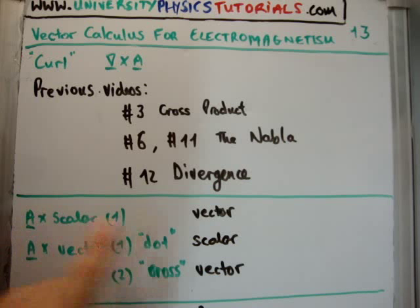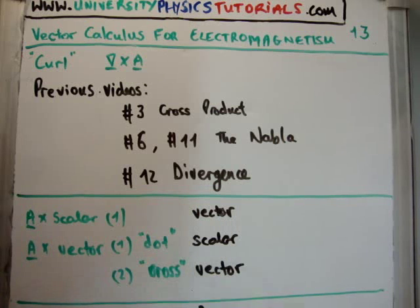When you multiply a vector by a scalar you get back a vector. But the dot product is known as the scalar product, so when you multiply a vector by another vector using the dot product you get back a scalar. And if you multiply a vector by another vector using the cross product you get back a vector.